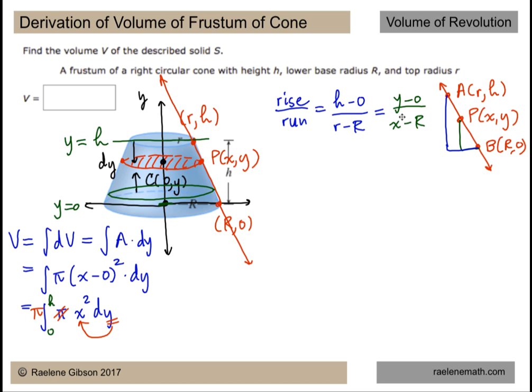and that has to equal the same slope or the same ratio of y minus zero over x minus R. So just pause the video and come up with an equation for y out of that and then rearrange it for x so that we can eliminate x in the equation.